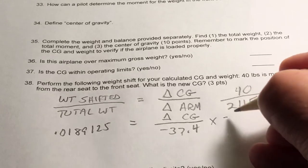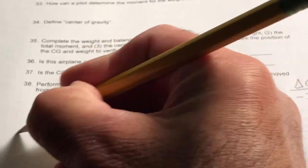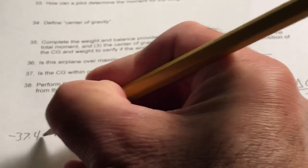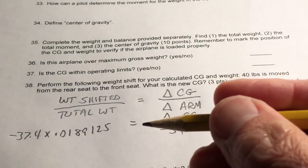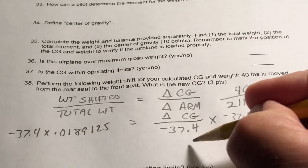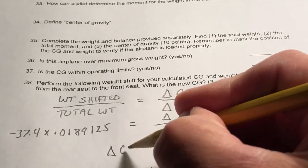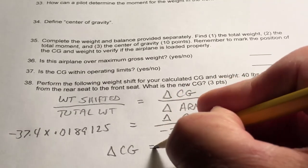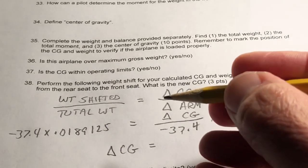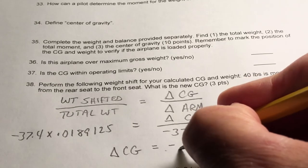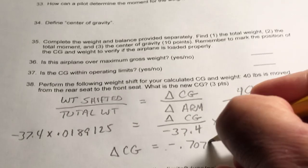So minus 37.4 on this side, minus 37.4 on this side. So the change in CG equals minus 0.7073.